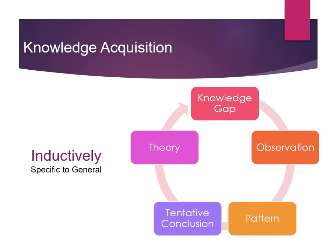One of the two primary approaches to knowledge acquisition is inductive reasoning, where we move from specific observations to general rules. Inductive reasoning always begins with a knowledge gap. This leads to new observations where we can detect and analyze new patterns, then we draw tentative conclusions from those patterns in order to produce theory. We do this in our everyday lives.